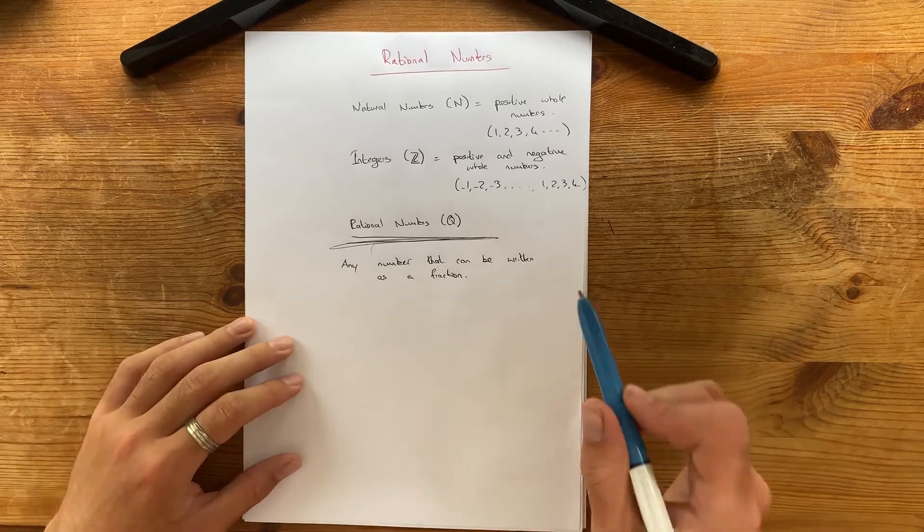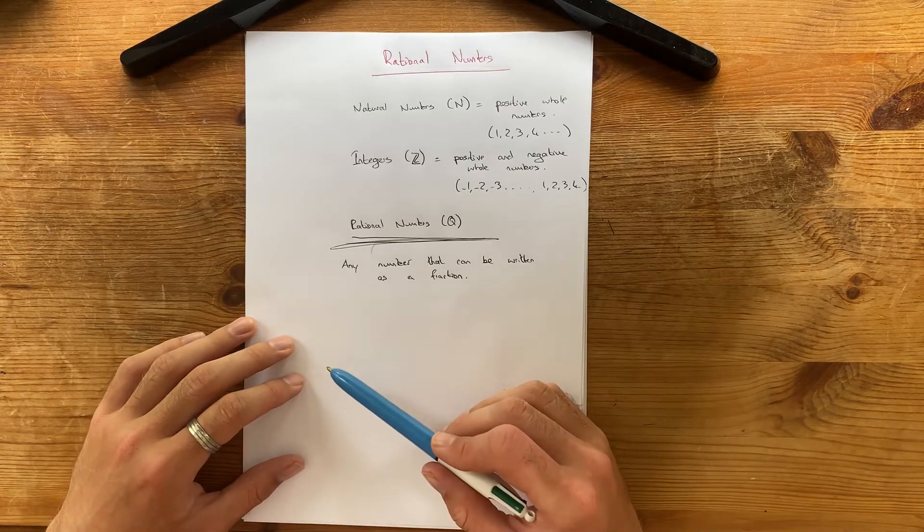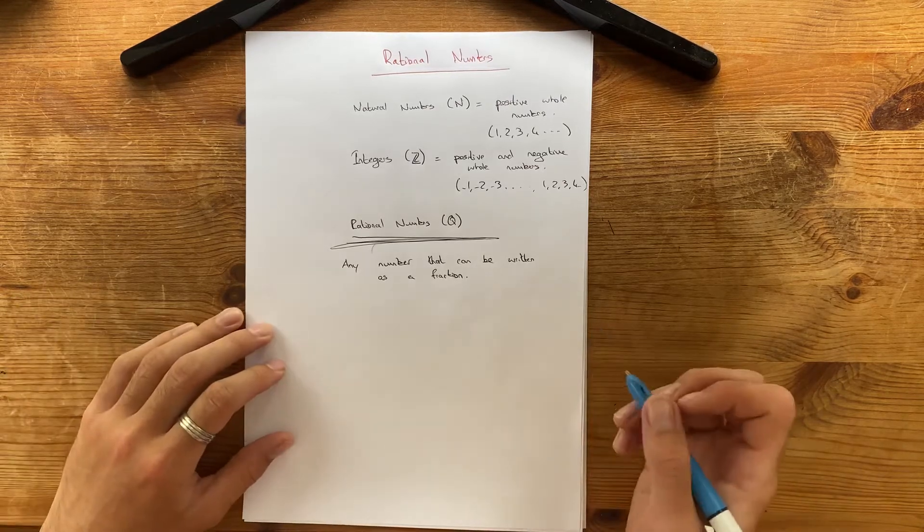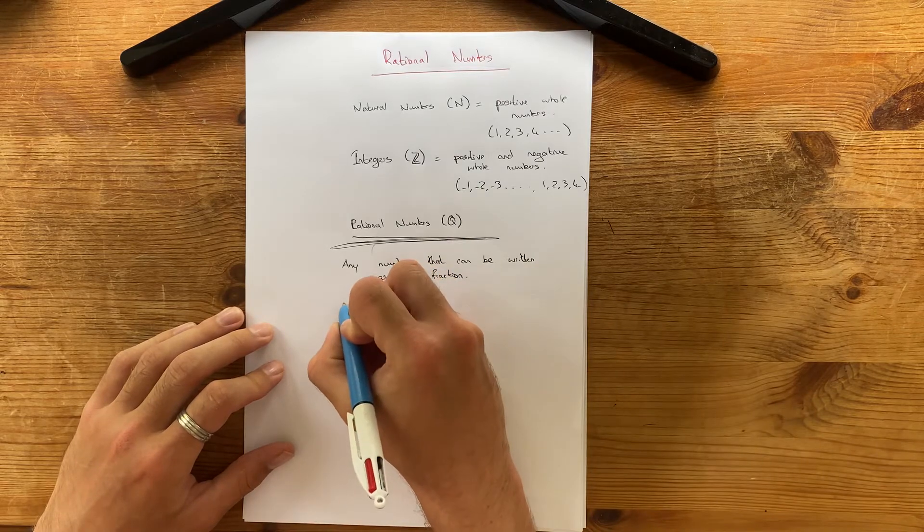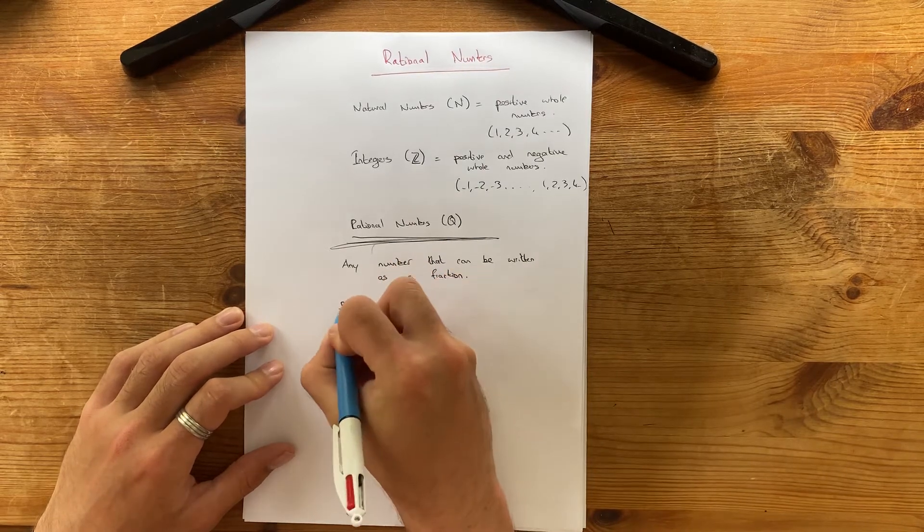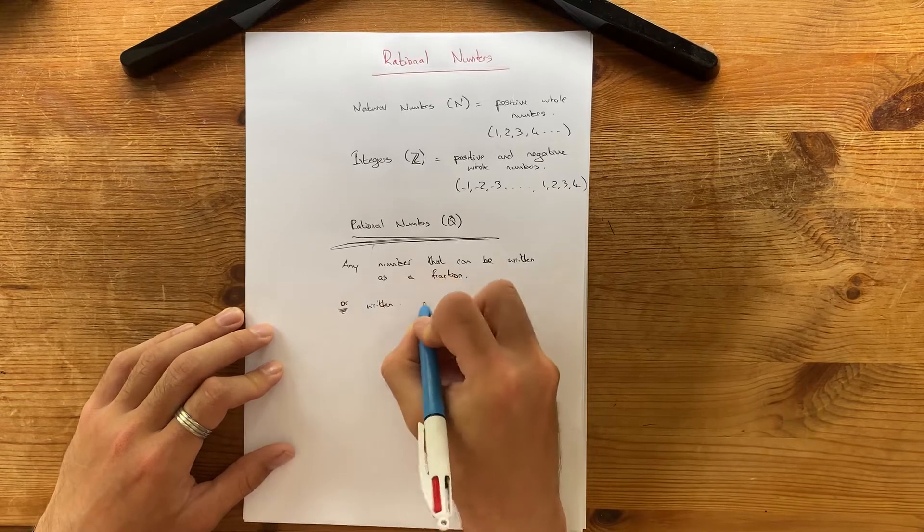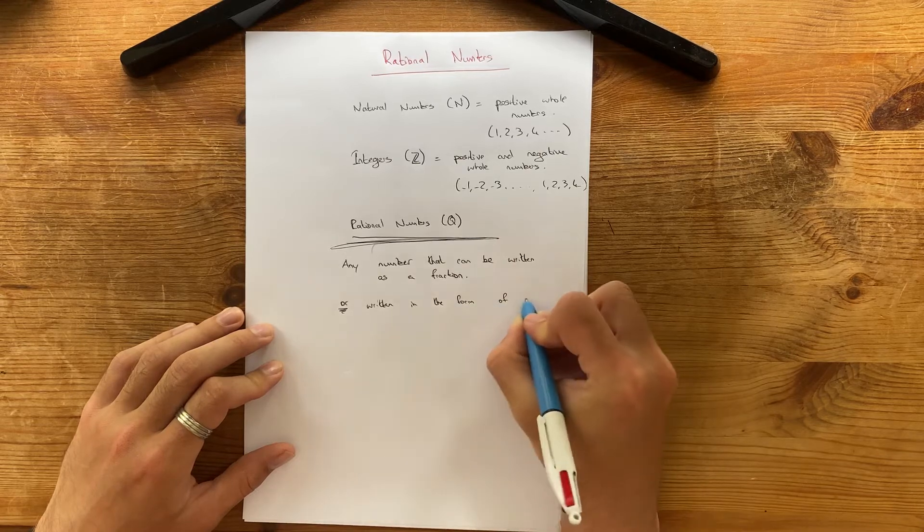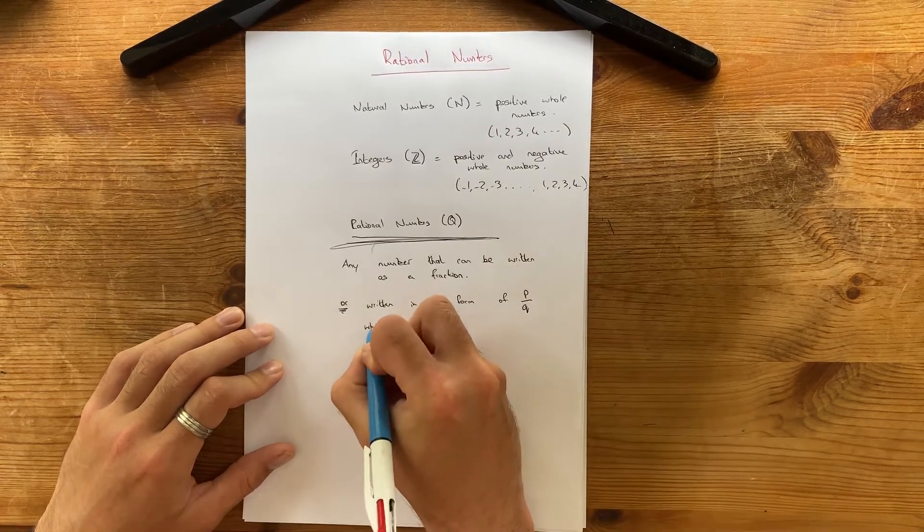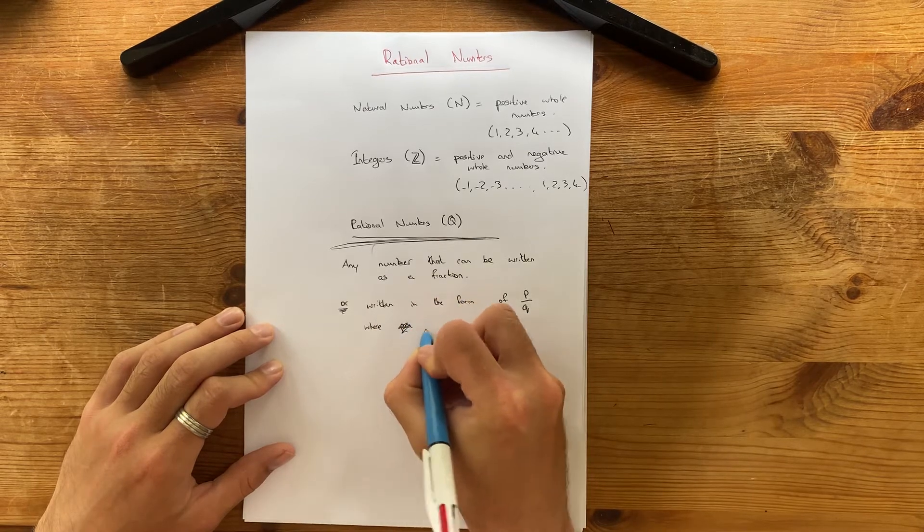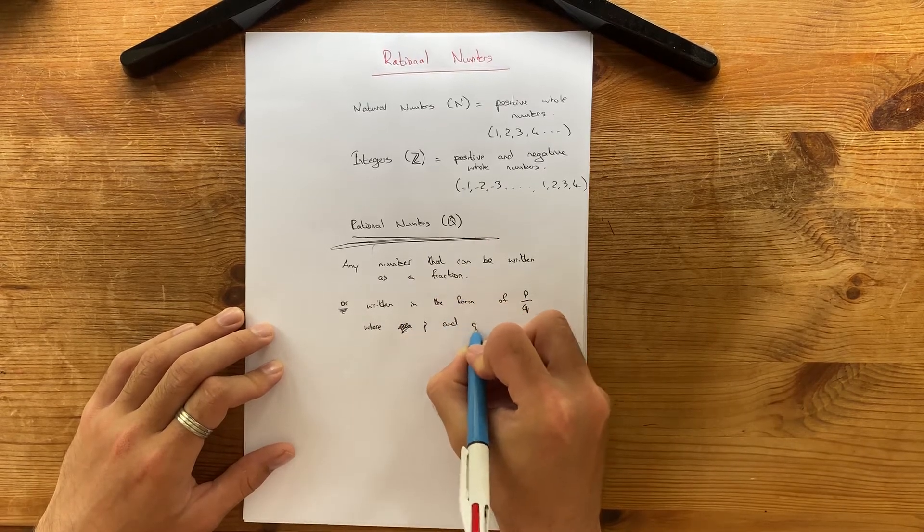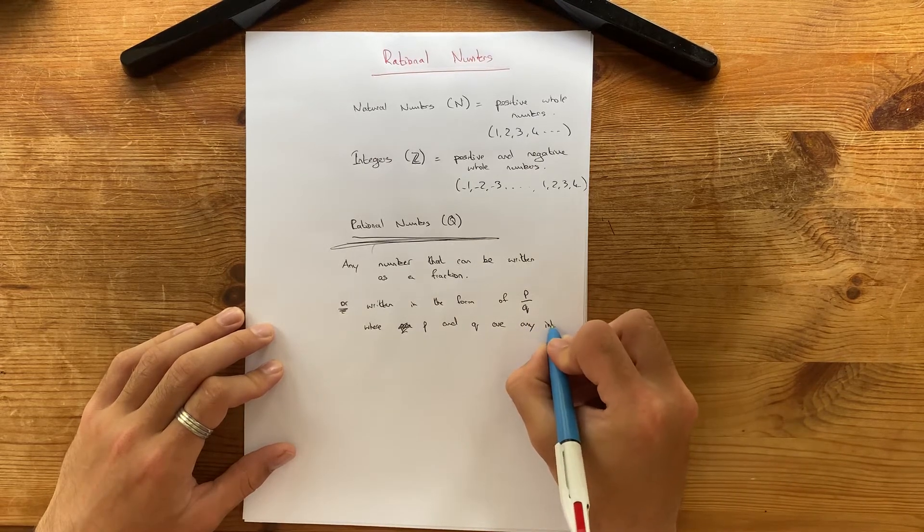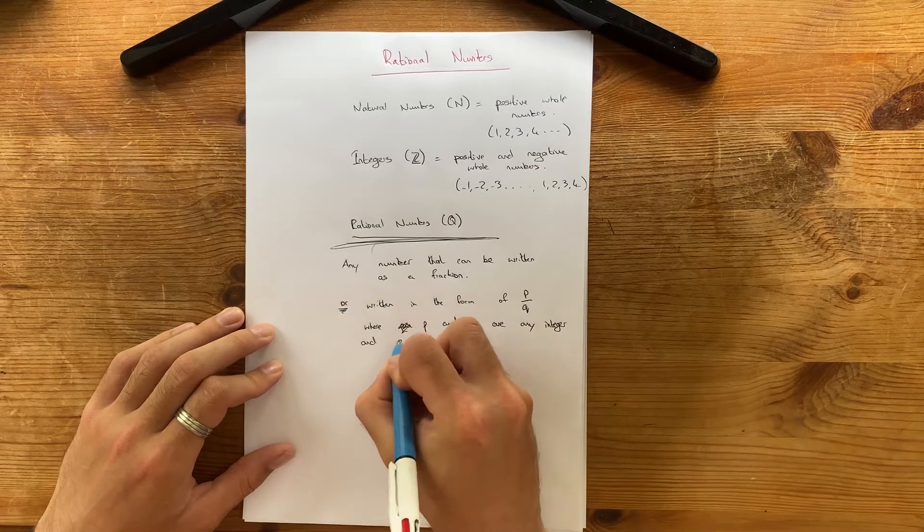Now, what's important is we look back and we look at the more mathematical definition of this, which is that the number can be written in the form of P over Q, where P and Q are any integer, and Q isn't equal to 0.